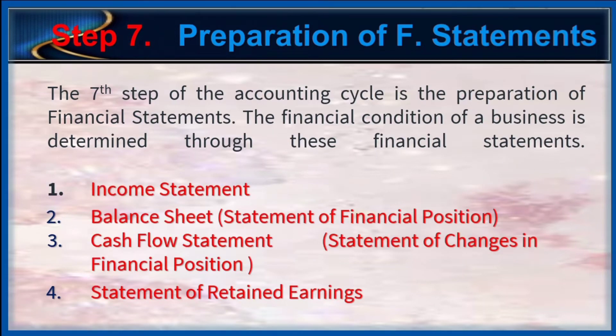Step 7: Preparation of Financial Statements. The seventh step of the accounting cycle is the preparation of financial statements. The financial condition of a business is determined through these financial statements, which are: No. 1, Income Statement; No. 2, Balance Sheet or Statement of Financial Position; No. 3, Cash Flow Statement or Statement of Changes in Financial Position; and No. 4, Statement of Retained Earnings.